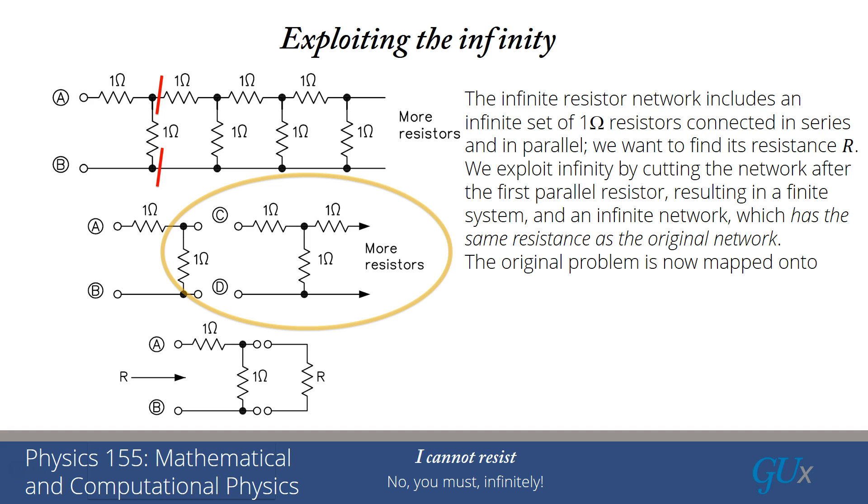Now our original problem is mapped onto this simpler problem with one resistor in series and one in parallel. Those are circled for you in the diagram along with the infinite resistor R, which is to the far right in the diagram.